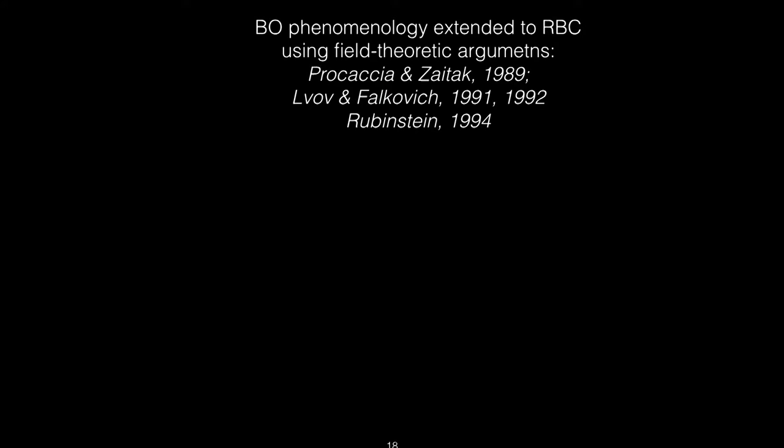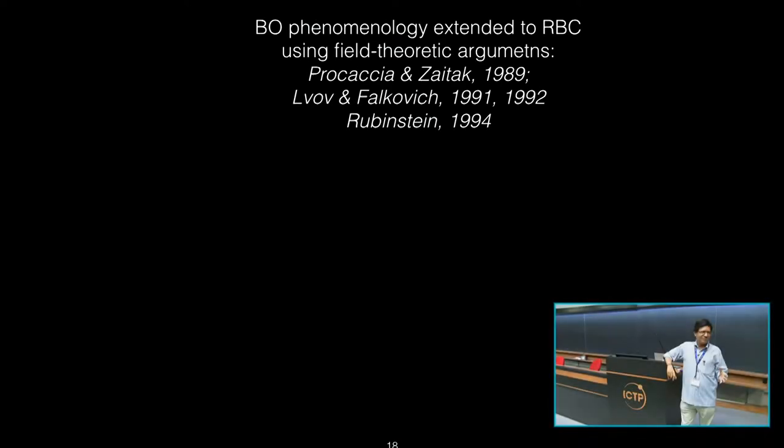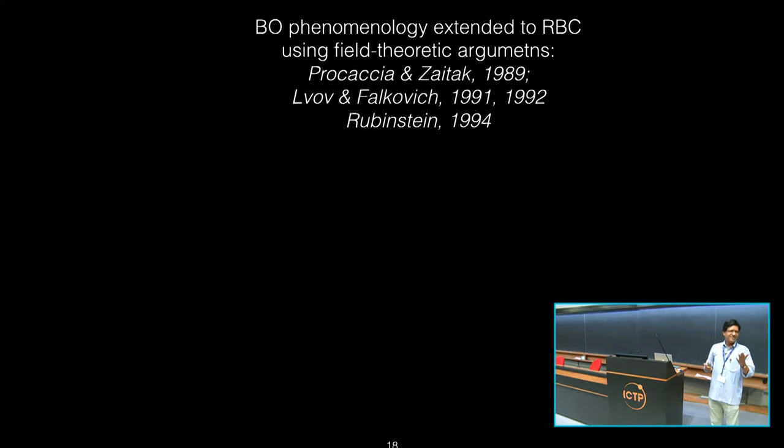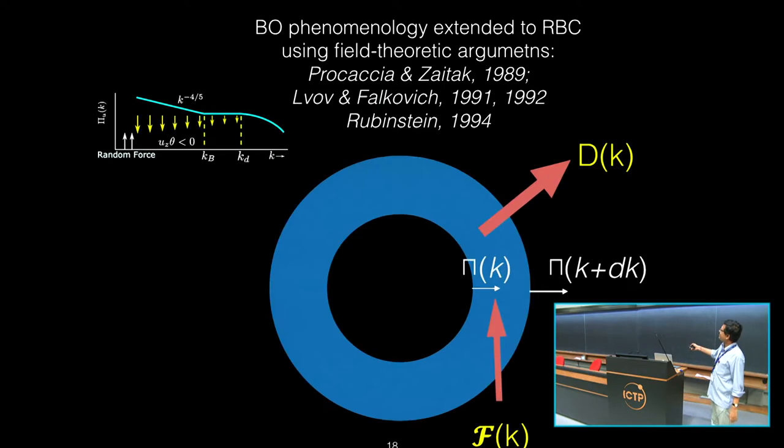There is field theory work by Procaccia, Zyatek, Lohse, and they kind of claimed that in the same equation - actually, equation is the same for Rayleigh-Bénard as well as for stably stratified flows - then Bolgiano-Obukhov theory should work. The spectrum must be minus 11 by 5. But there is a problem in the argument that this energetics argument is not correct. There's one place where the fk, the sign of fk is different.